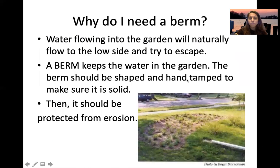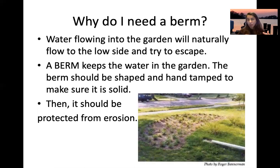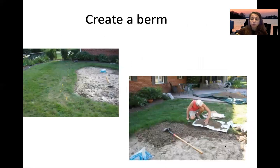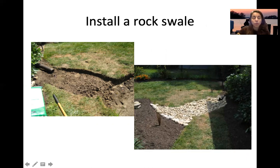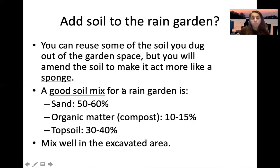Here's an example showing the excavated soil kept for the berm. Water flows into the groundwater naturally, and the berm keeps it in. Shape the berm solidly and plant it to protect against erosion. You can install a rock swale to bring stormwater from the downspout pipe to the rain garden.